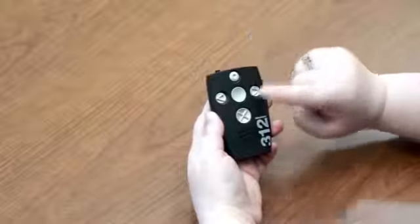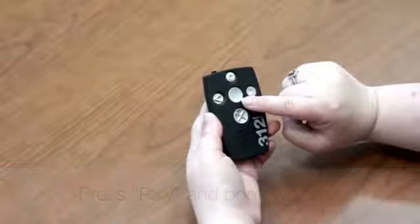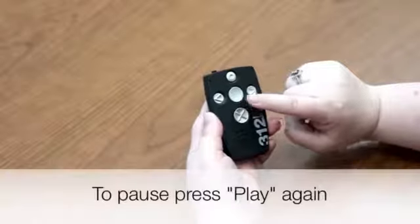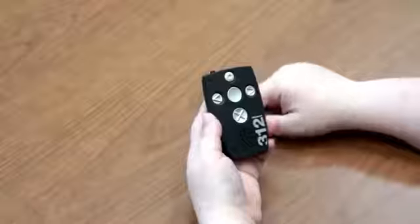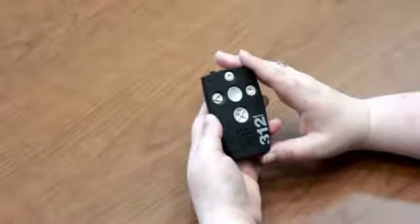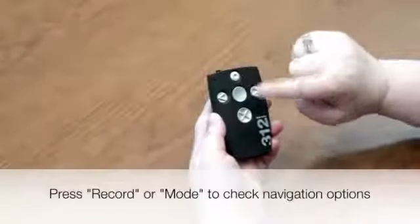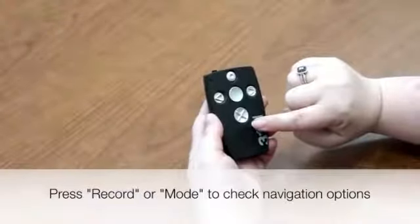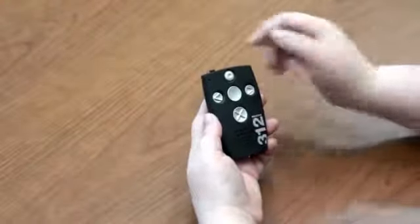To start reading a book, press the play button and the device will start playing the first book it finds. To pause playback, simply press the play button again. Depending on which format of book you are listening to, there are different options for navigation available. Press the record or the mode button while inside the books application to check what kind of navigation options are available.